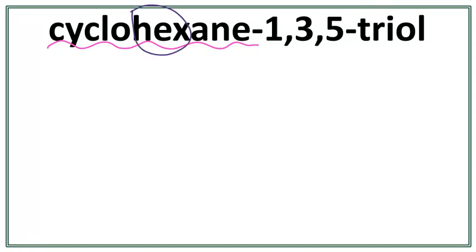This hex right here tells us that there are 6 carbons present in the parent chain. This ane here tells us that there are only single bonds present between the carbons in the parent chain.